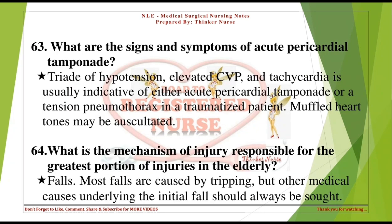What are the signs and symptoms of acute pericardial tamponade? The triad of hypotension, elevated CVP, and tachycardia is usually indicative of either acute pericardial tamponade or tension pneumothorax. In a traumatized patient, muffled heart tones may be auscultated.